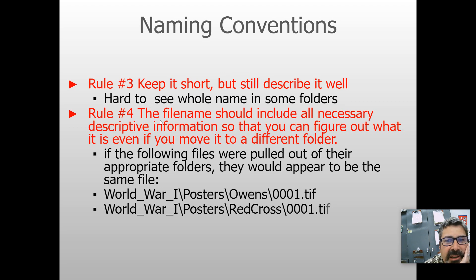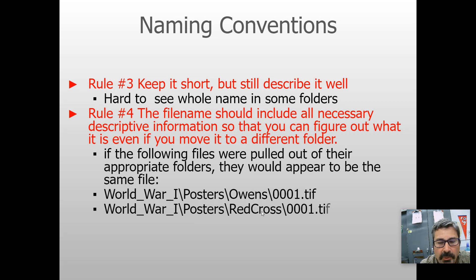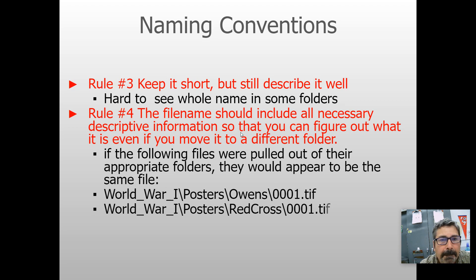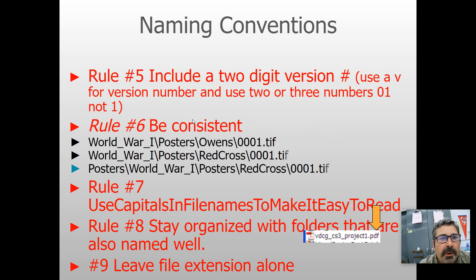Rule number four: the file name should include all necessary descriptive information so you can figure out what it is even if you move it into a different folder. For example, if you have a folder of World War II poster pictures from the Owens Company named OO1.tif, and another file also named OO1.tif in a Red Cross folder, what happens if one gets moved out of its folder? There's no descriptive information on the file itself. The file itself should have enough information for you to know what it is.